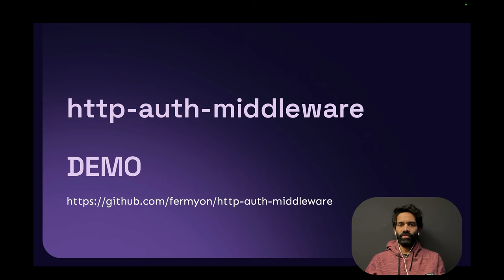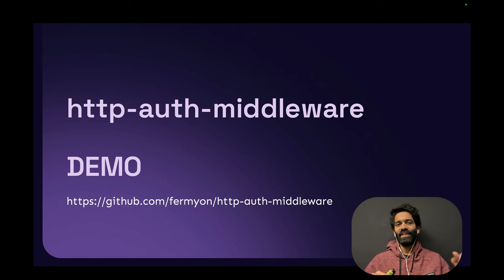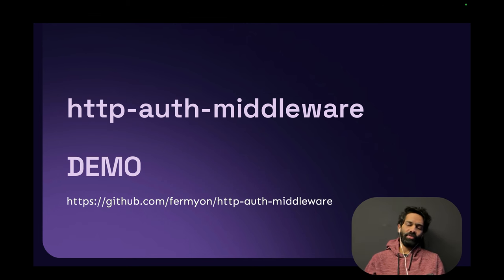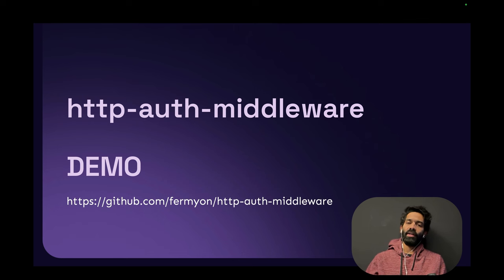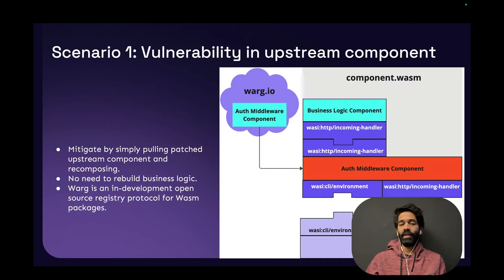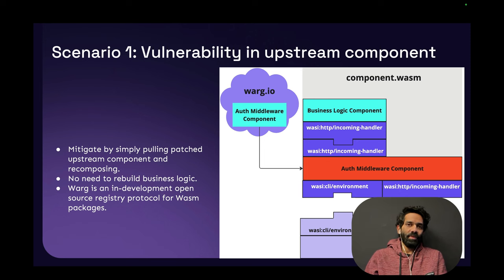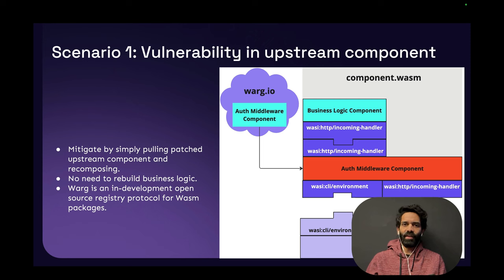What are some of the advantages of this component model? You can write programs in multiple languages and get different functionalities without suffering from that 2400-hour problem. Here's a security scenario: imagine there's a vulnerability in an upstream component — in this case, a vulnerability in the auth middleware component. The good thing is it doesn't actually affect your entire program. Your business logic can remain the same, the underlying WebAssembly runtime layers can remain as is. You mitigate this by simply pulling a patched upstream component for this middleware.